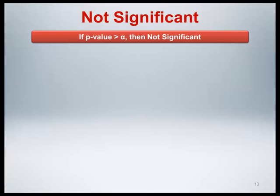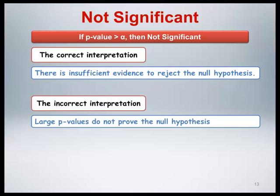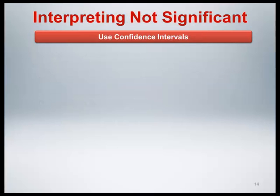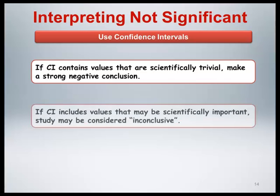If the result is actually not significant, how should it be reported and interpreted? The correct interpretation is that there is insufficient evidence to reject the null hypothesis. Large p-values do not prove the null hypothesis. The use of confidence intervals can be especially helpful in interpreting results that are not statistically significant. If the confidence interval contains only values that are scientifically trivial, then one can make a strong negative conclusion. If the confidence interval includes values that may have scientific importance in addition to the null value, then the study may be considered inconclusive.